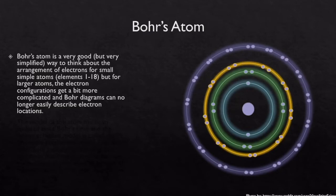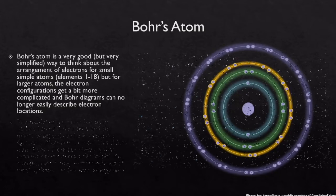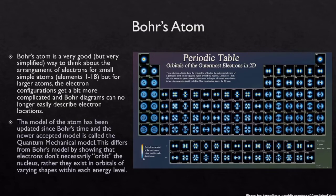Bohr's atom is a really good but really simplified way to think about the arrangement of electrons for simple atoms — just elements 1 through 18. But for larger atoms, larger than 18, the electron configurations start to get a little bit more complicated, and Bohr's diagrams are no longer extremely useful in describing the locations and the order in which those electrons are added. The model of the atom has been updated since Bohr's time, and this newer accepted model is called the quantum mechanical model.